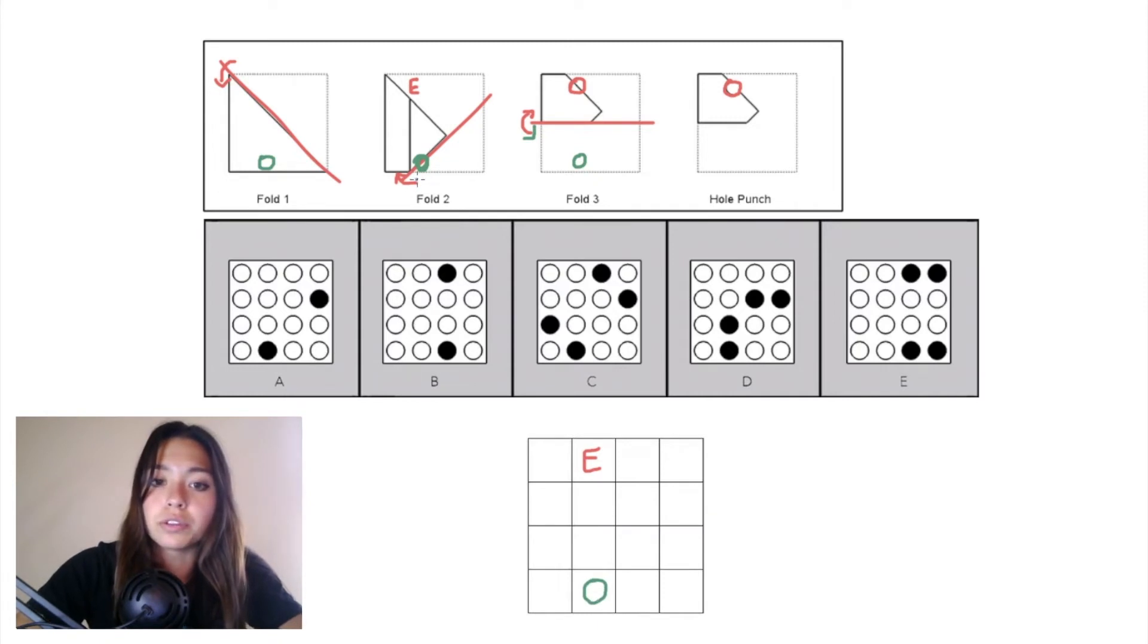When we undo fold two, the piece of paper that was initially folded up is this triangle in blue, which includes this one green hole punch. Since that green hole punch exists on that diagonal plane, when we undo that fold we're just going to be filling in the other half of that hole punch.